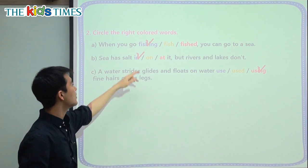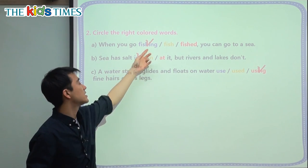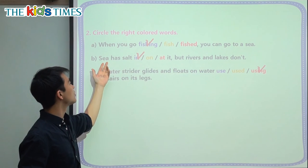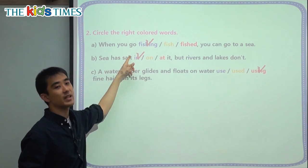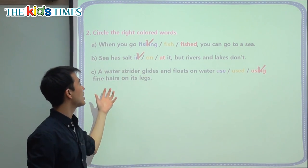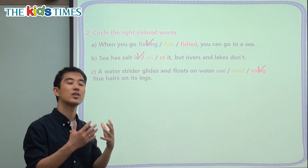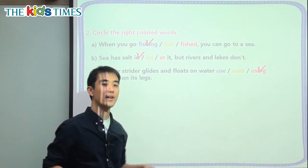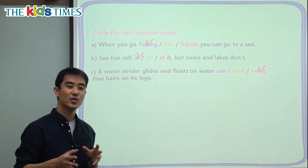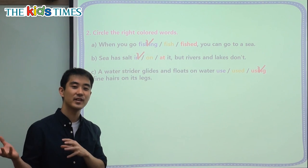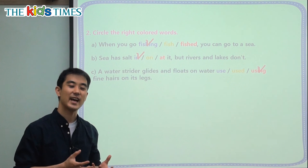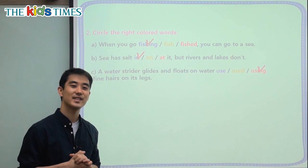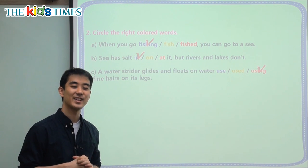So to review: 'fishing' is what we call a gerund — it's a 명사, not a verb. 'In' means inside the water — 소금이 안에 있다. And when we are explaining how to do something, 어떻게 하는지 설명할 때는, we use the present progressive, 현재 진행사. So next time you go to the ocean or the river, see what's different about the animals and the water. Thank you for joining us today for Kids Times. My name is Chris from Reading Town — I'll see you next time.